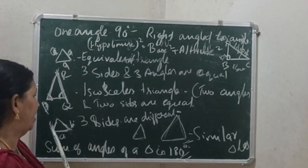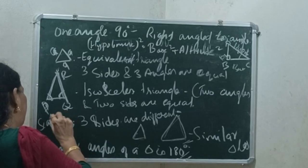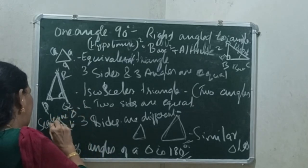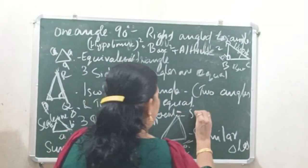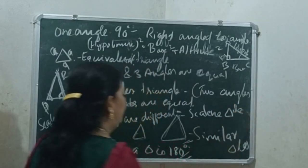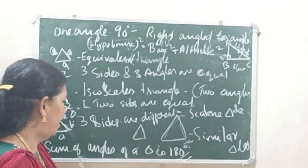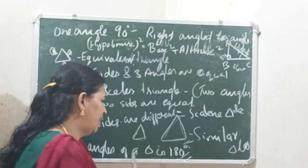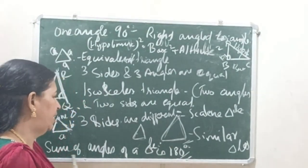This is the scalene triangle. We call it the scalene triangle. Three sides — A, B, C — are all different. The sum of all angles of a triangle is 180 degrees.